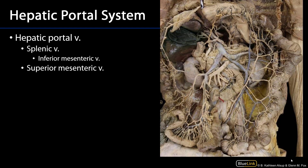The major vessels in play here are the superior mesenteric vein, the splenic vein, and the inferior mesenteric vein. Typically the inferior mesenteric vein is going to drain into the splenic vein. Where the superior mesenteric vein meets the splenic vein, we have the hepatic portal vein, or sometimes just called the portal vein.